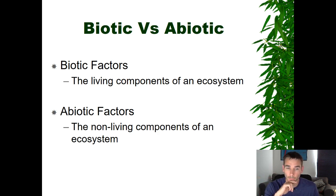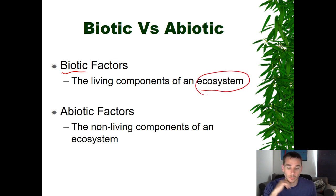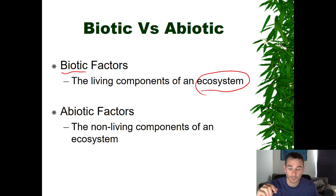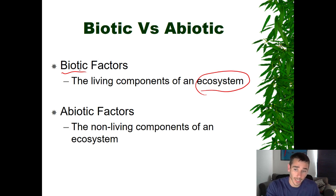Biotic refers to anything we would consider a living component in an ecosystem. If you're not sure what ecosystem means, it might be a good time to pause and Google it, but essentially it's a place or location on Earth where you have interactions between all sorts of different organisms. In ecosystems you can have living components and non-living components interacting. Biotic refers to the living components, and abiotic refers to the non-living components. Make sure you fill those in on your outline.